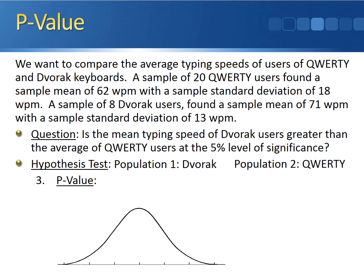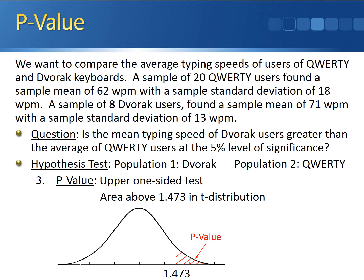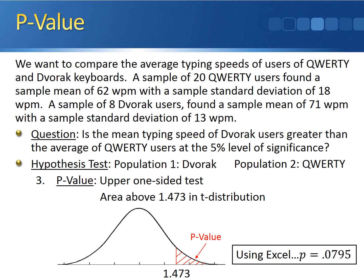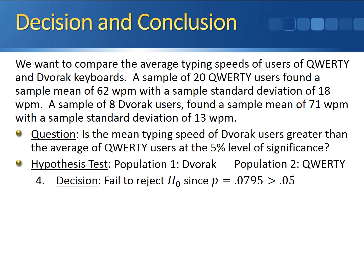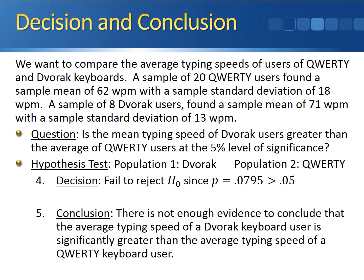Now that we have the test statistic, we can calculate the p-value. According to the alternative hypothesis, we have an upper one-sided test. The p-value is the area above 1.473 in the t-distribution with 17 degrees of freedom. Since we can't get the exact p-value from the t-table, we use Excel, which gives us a p-value of 0.0795. Our decision is to fail to reject the null hypothesis because 0.0795 is greater than the significance level of 0.05. There is not enough evidence to conclude that the average typing speed of a Dvorak keyboard user is significantly greater than that of a QWERTY keyboard user.